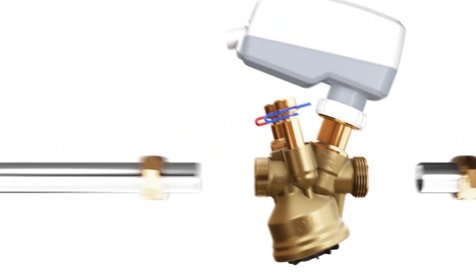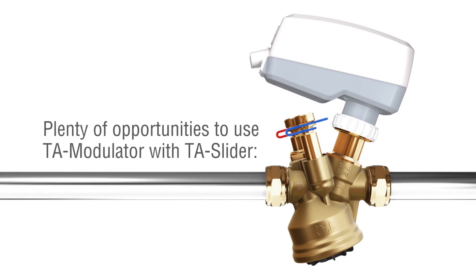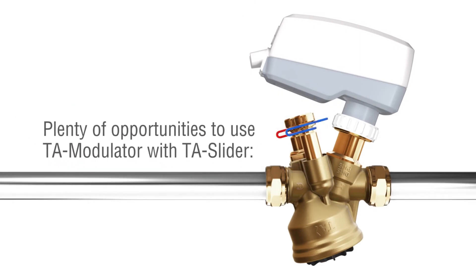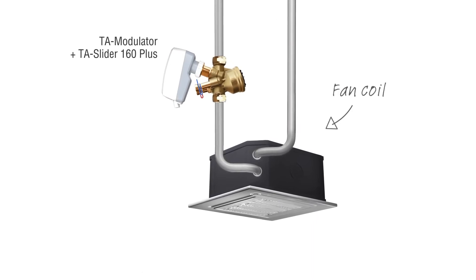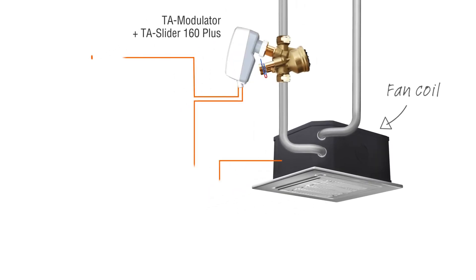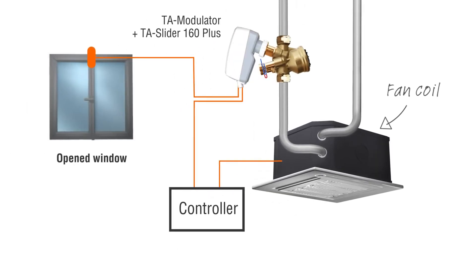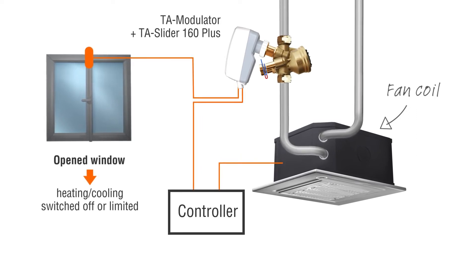There are plenty of opportunities to use TA Modulator with TA Slider. Both will deliver perfect temperature comfort in systems with fan coils. Higher energy savings can be achieved with TA Slider Plus with programmable binary input — for example, TA Slider can switch off heating or cooling when the window is open.